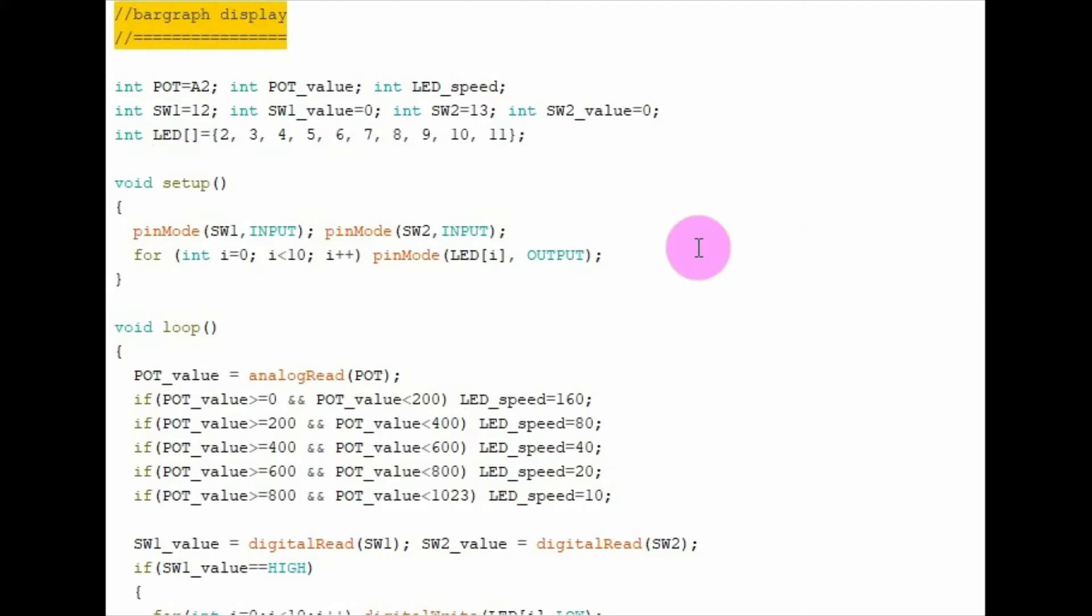Let's have a look at the C++ code used in this project. Let's start with the global variables. These variables are associated with the potentiometer. This variable here determines the value that will go into the delay function.